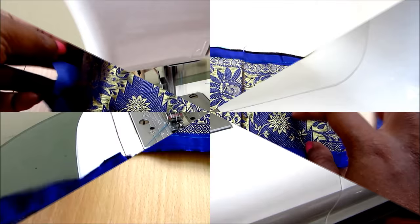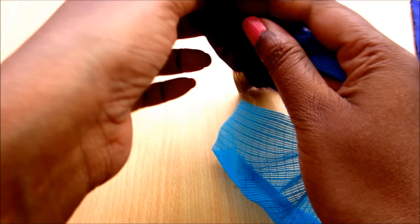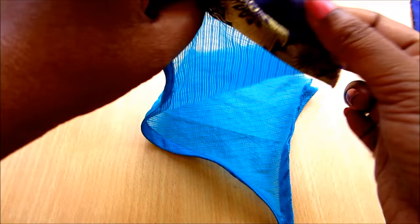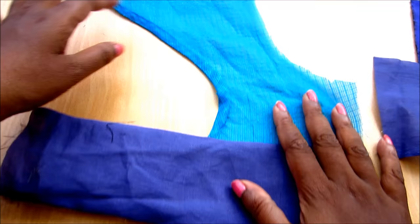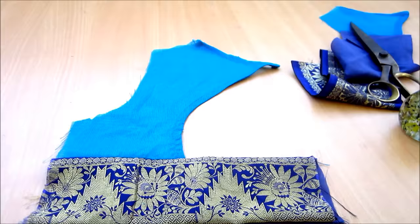Now pull inside bodice out slowly, turning all right sides on the top and moving raw edges inside. See, this is how it looks. Give the gentle press on this lining and the border so that the underneath seaming allowances should settle properly.